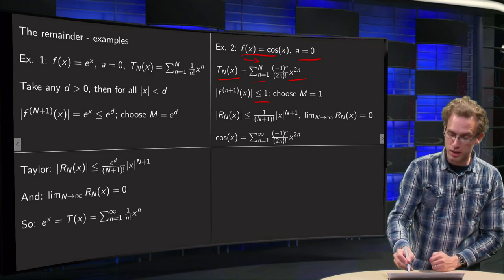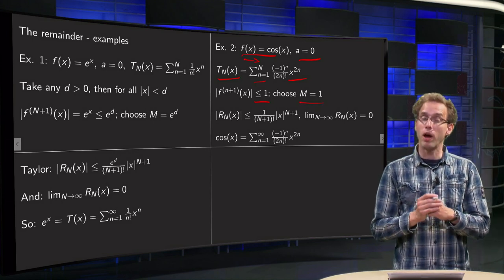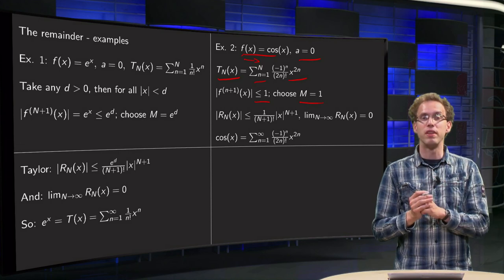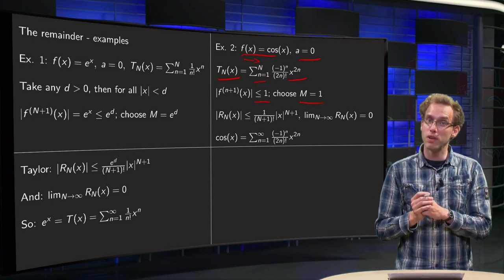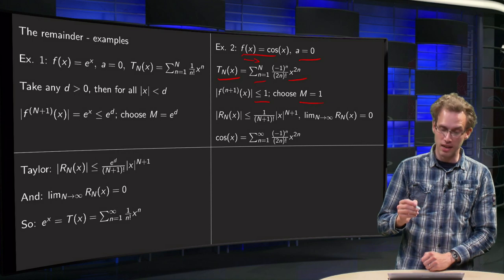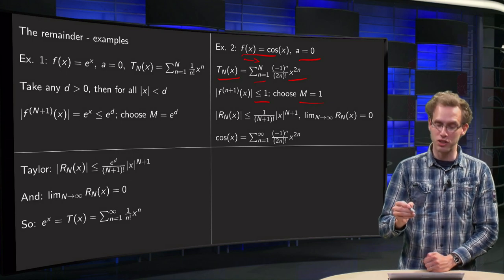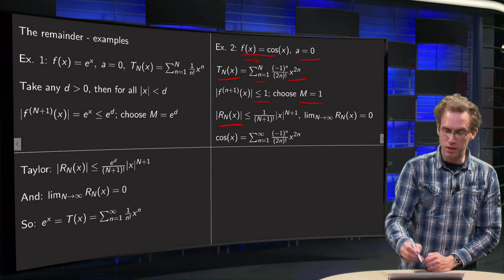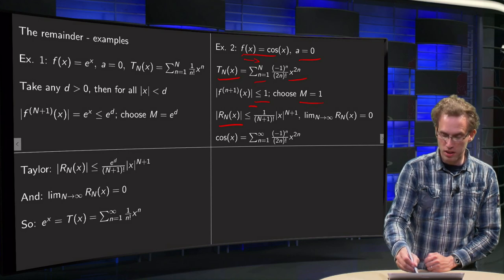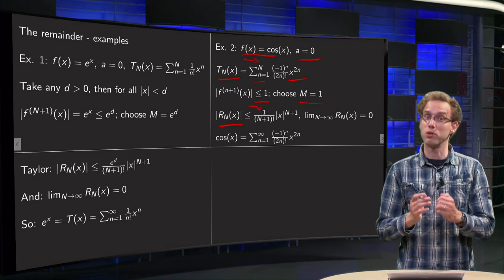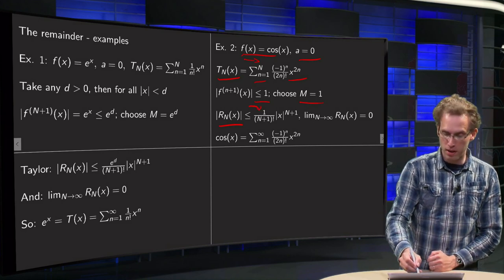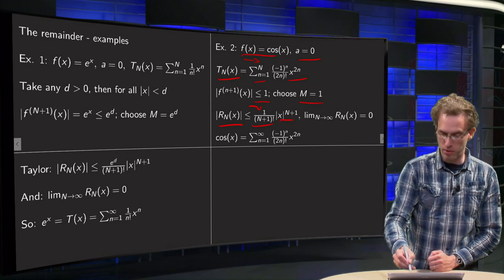So we can choose as our capital M, M equals 1, then we know that our N-th derivative is below this M, and we can use Taylor's inequality again, which has the remainder smaller or equal than this capital M, well, you can't see it anymore because it's 1, divided by N plus 1 factorial times x to the power N plus 1.